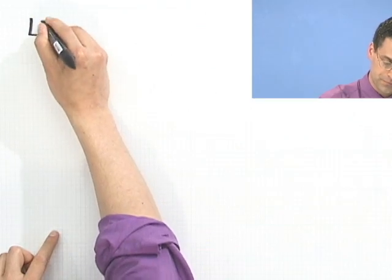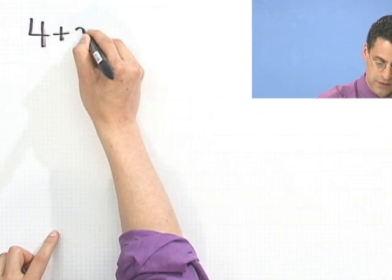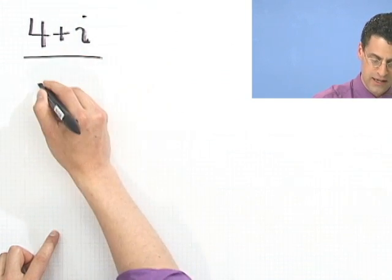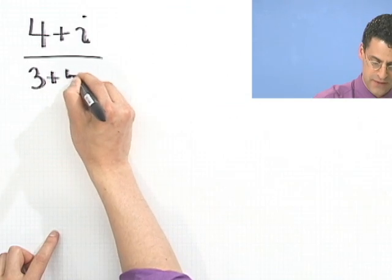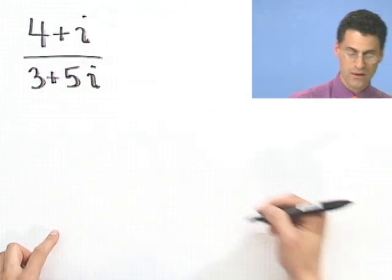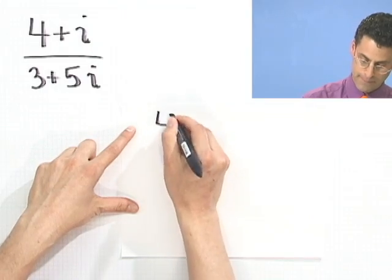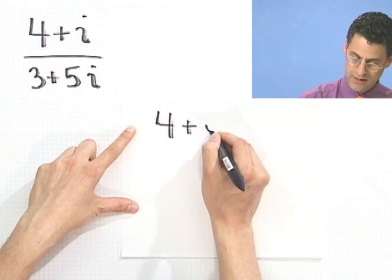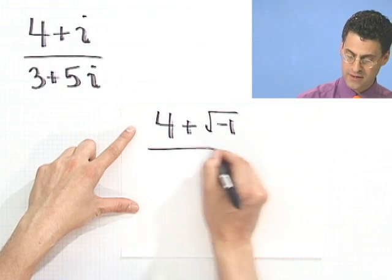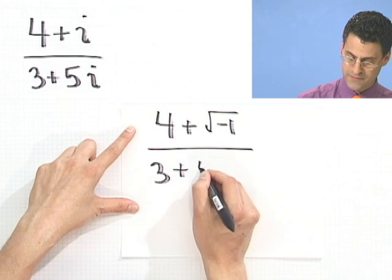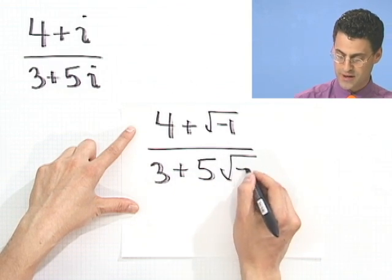Suppose I wanted to consider 4 plus i and divide it by 3 plus 5i. Well, to inspire this, let me actually remind you of what this really is. You have to remember what i is here. So I have 4 plus square root of minus 1, divided by 3 plus 5 square root of minus 1.